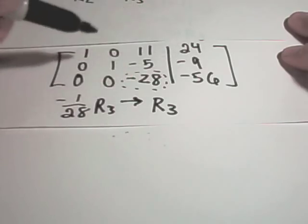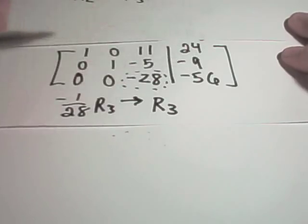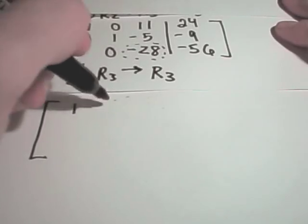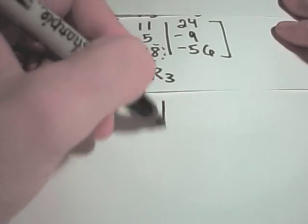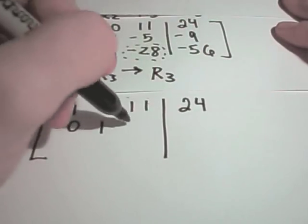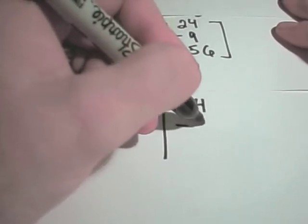0, 1, negative 5, negative 9, 0, 0, negative 28, negative 56. Hopefully I haven't done any crazy arithmetic. This is one of those things, once you know how to do it by hand, it's probably best just to put it into a calculator. It's easy to make mistakes.